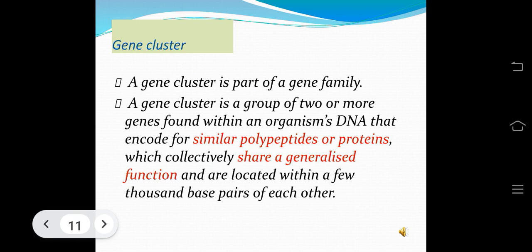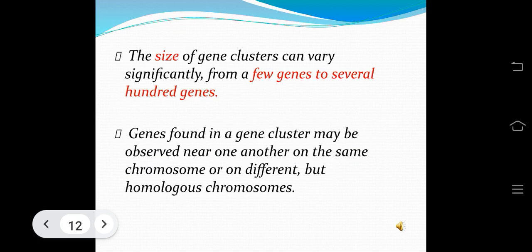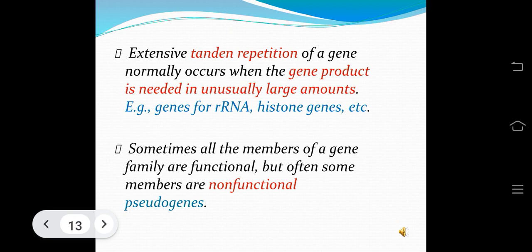A gene cluster is a part of a gene family — a group of two or more genes found within the organism's DNA that encode similar polypeptides or proteins, share a generalized function, and are located within a few thousand base pairs of each other. Gene cluster size varies from a few to several hundred genes. Tandem repetition of a gene occurs when the gene product is needed in unusually large amounts, such as rRNA and histone genes. Some gene family members may be non-functional pseudogenes.